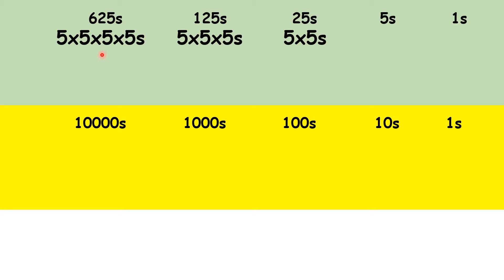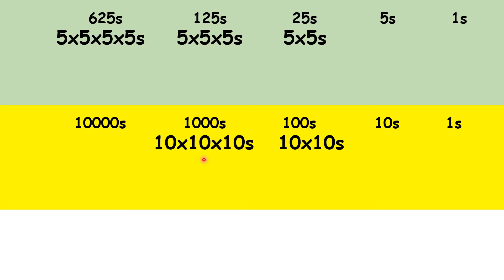So that's place values with base 5. Though what the place values represent is different, it's a similar idea to what we do with our normal base 10 system. We have units, then tens, then hundreds because 10 times 10 is 100. Then thousands because 10 times 10 times 10 is 1000. Then ten-thousands because 10 times 10 times 10 times 10 is 10,000.